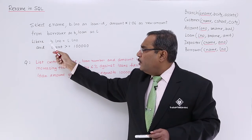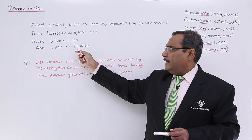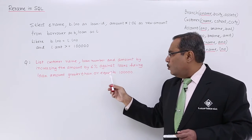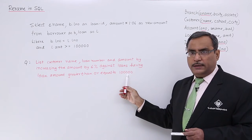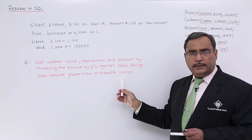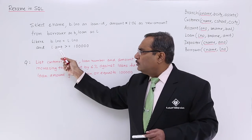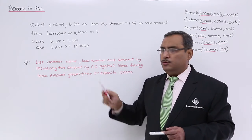What is the condition? Where B dot LNO is equal to L dot LNO and one another extra condition was there. Amount should be greater than 1 lakh. L dot amount is greater than equal to 1 lakh.